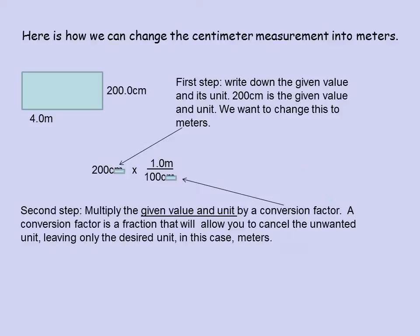Canceling centimeters leaves only the desired unit, which in this case is meters. That gives us an answer, when we work this out, of two meters. That desired unit — the meter — is brought over into the answer.